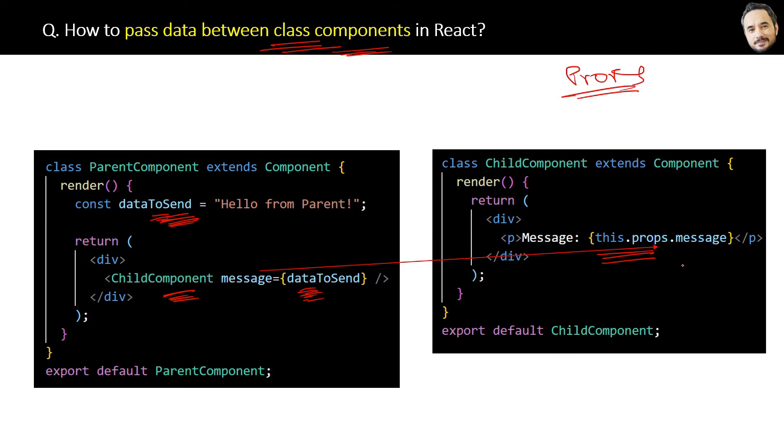Finally, if you call the parent component from the index.js file, then this will be the output with the data passed from the parent component to the child component.